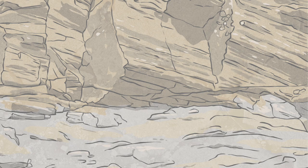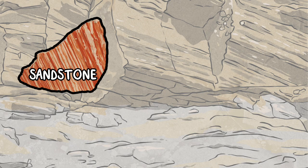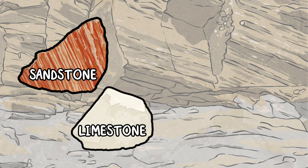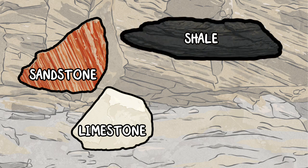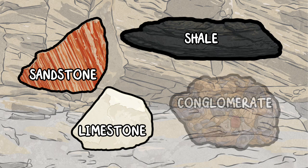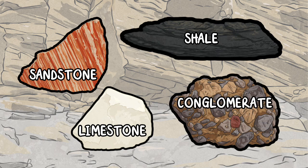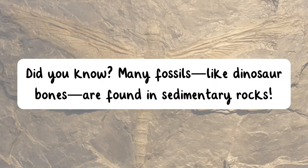Some common types of sedimentary rock include sandstone, made from tiny grains of sand pressed together; limestone, formed from ancient sea creatures and shells, which often contains fossils; shale, a smooth dark rock formed from clay; and conglomerate, a rock made from pebbles and sand cemented together. Did you know? Many fossils, like dinosaur bones, are found in sedimentary rocks.